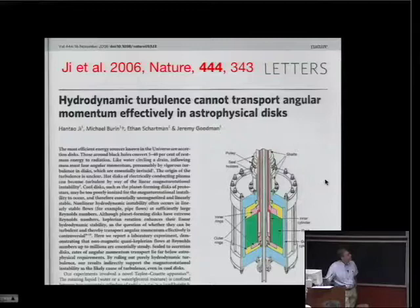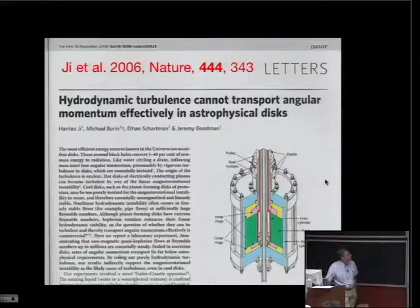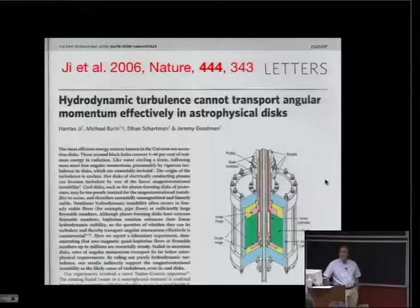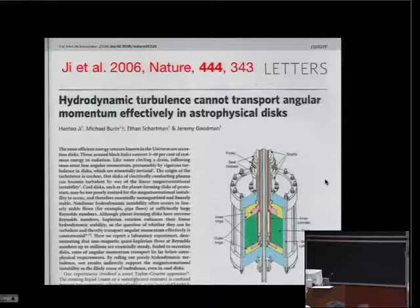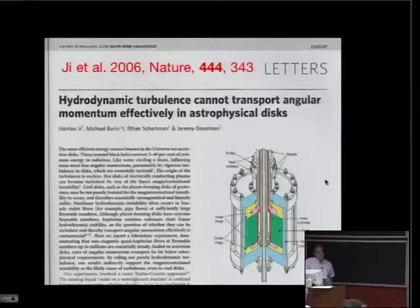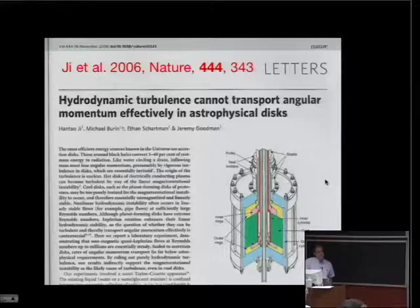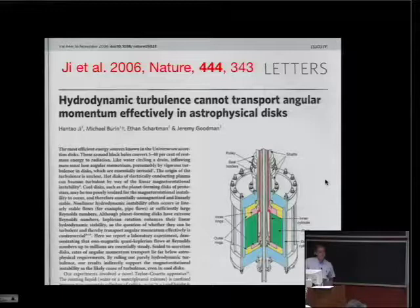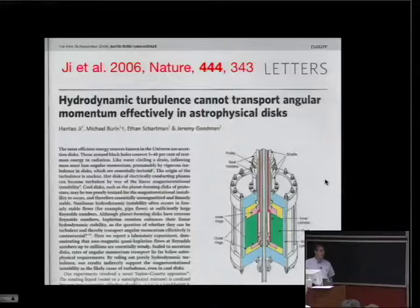There are questions about the nature of transport in protostellar disks. In my opinion, a swift karate chop to the back of the neck was delivered to hydrodynamic turbulence models by the beautiful experiment that was done here at Princeton, which showed that at Reynolds numbers of 2 million, the Keplerian profiles were as stable as uniformly rotating profiles. But people still complain about various things. I suppose that remains an open issue. But certainly the onus is on people who wish to invoke hydrodynamical turbulence in Keplerian disks.